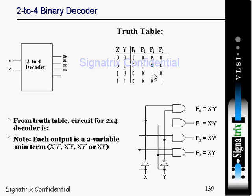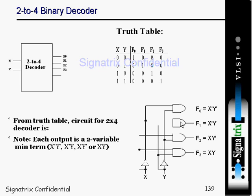When inputs are 1,0 you are enabling the f2 output. This is the way to implement these things. From the truth table circuit for the 2-to-4 decoder, when x and y are both 0, they are selecting gate f0. They are inverting and using this — when x and y is 0,1 they are inverting and taking x directly as 1 to get f1. In this way you can implement a schematic diagram for a 2-to-4 binary decoder.